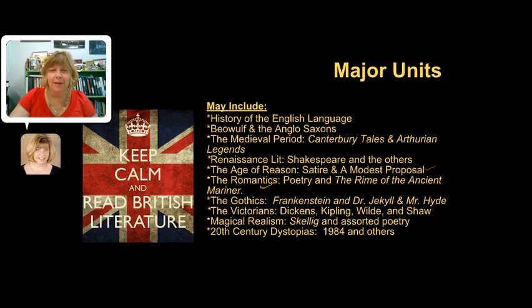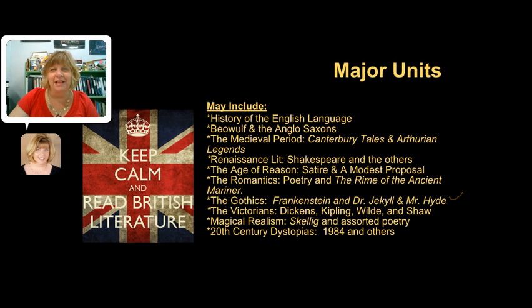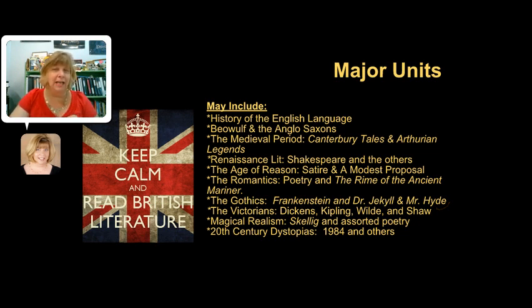Into the Romantics, we'll be talking about the big poets of that time and reading some of the longer poetic works as well. We'll spend a little bit of time with the Gothics — that's Frankenstein, Dr. Jekyll and Mr. Hyde — sort of the origins of what we think of as today's horror genres. A little bit of time with the Victorians, Charles Dickens and some of the others there. Then finishing up the course with Magical Realism with a novel called Skellig and some poems, and then 20th century dystopian fiction, looking at 1984 and some other examples as well. Some of these we'll be studying with film versions as well as text versions, and some we'll be reading in full while others we'll just be reading excerpts.